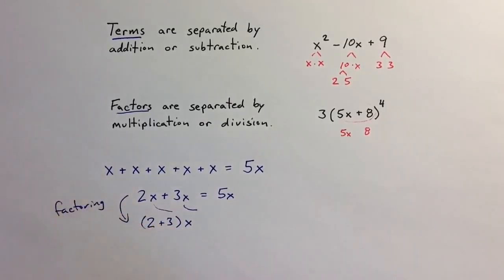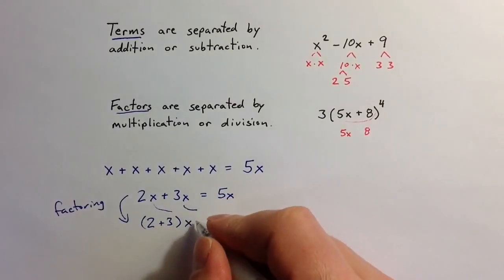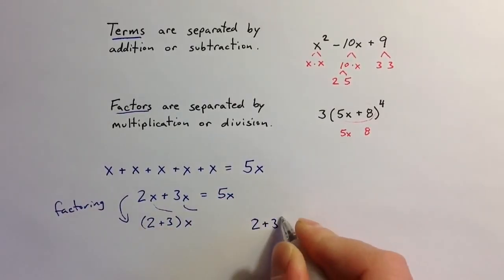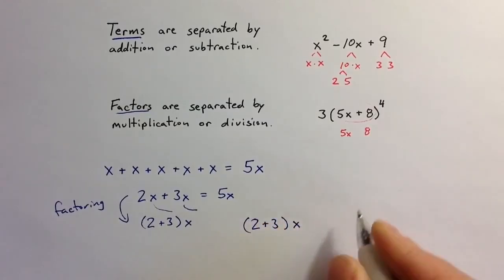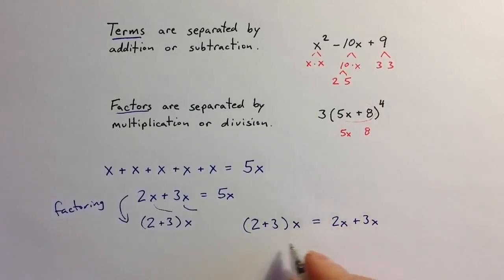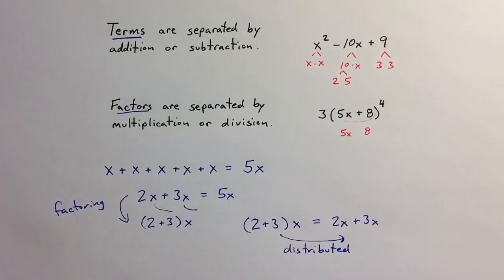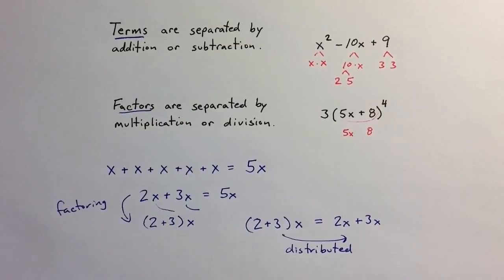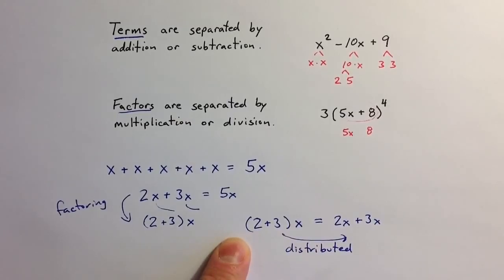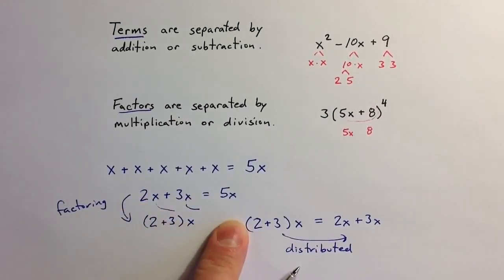Going in that direction — factoring out the x. Going back the other way, if I start with (2 plus 3) times x, I could turn that into 2x plus 3x by distributing. Because of the essential nature of multiplication and addition, we can distribute a multiplication across terms, or factor a common factor away from terms.